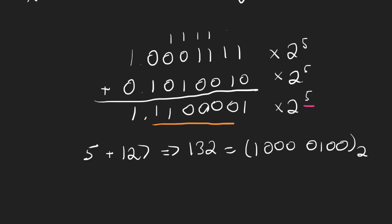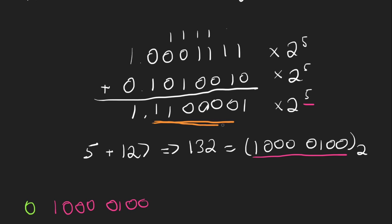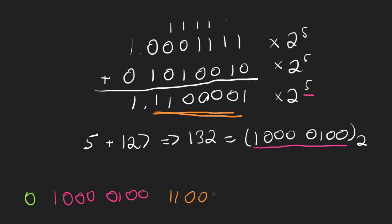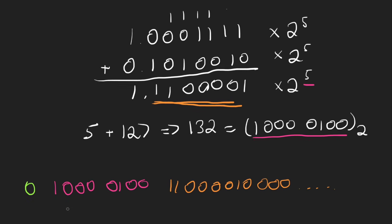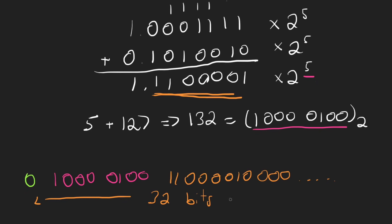Now we can assemble the final IEEE 754 representation. Our sign is 0 since the answer is positive. Then we write out our exponent — 10000100 — and then our mantissa, which I'll copy from the result. This continues with zeros until the entire number is 32 bits wide. Go ahead and do that yourself — and that's how you add two IEEE 754 floating point numbers. Thanks for watching.